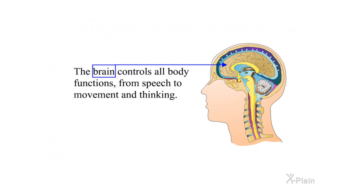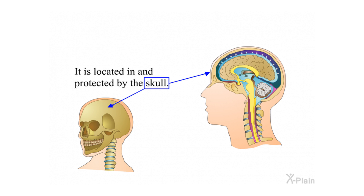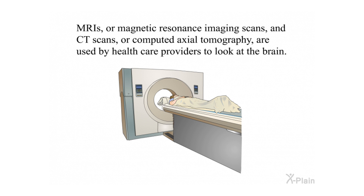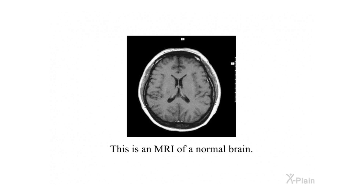Anatomy. The brain controls all body functions, from speech to movement and thinking. It is located in and protected by the skull. MRIs, or magnetic resonance imaging scans, and CT scans, or computed axial tomography, are used by health care providers to look at the brain. This is an MRI of a normal brain.